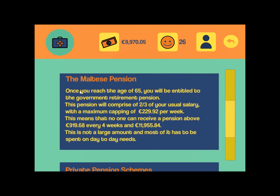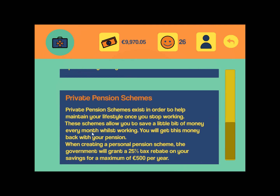There are also pension schemes. You can read more information on the Maltese pension, which informs you on the maximum pension amount you can receive — two-thirds of your usual salary. You also have information on private pension schemes, where you can get a 25% tax rebate for up to 500 euros per year.